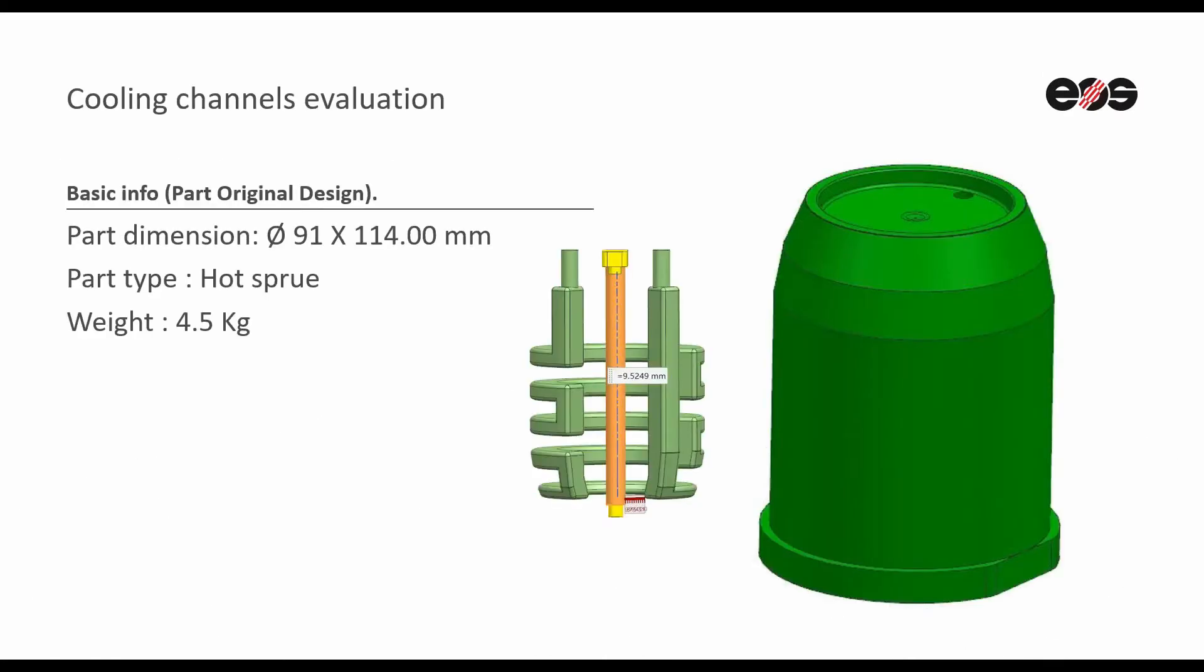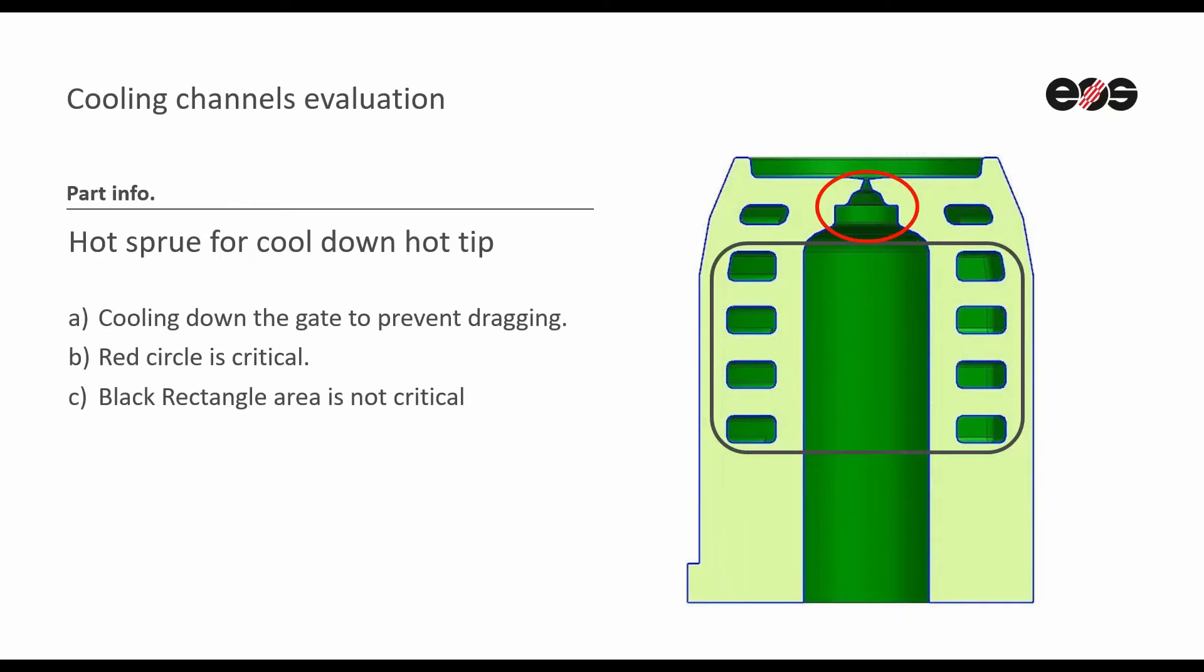This is the part information. It's a pretty common hot sprue used for injection molding. In this part, we can identify that cooling down the gate to prevent dragging is the main function.